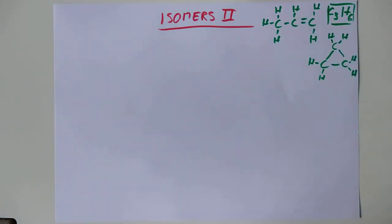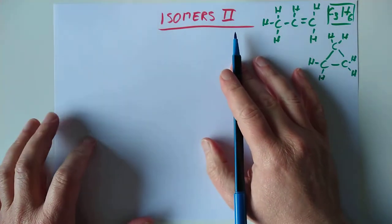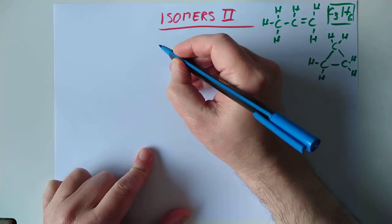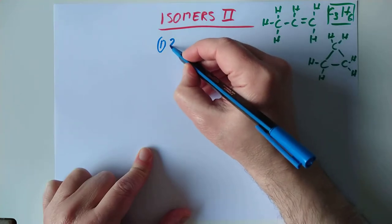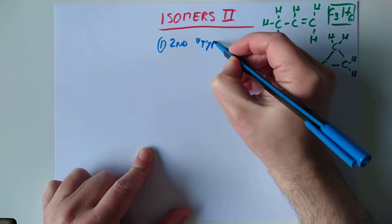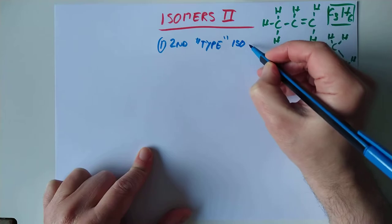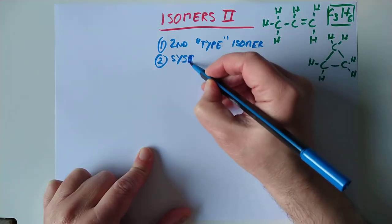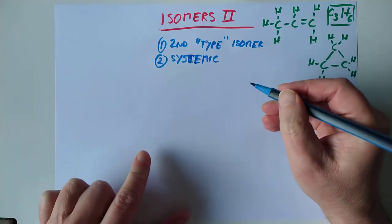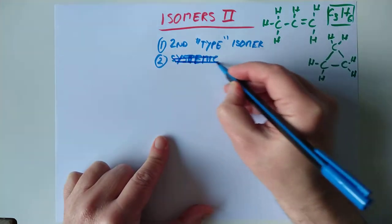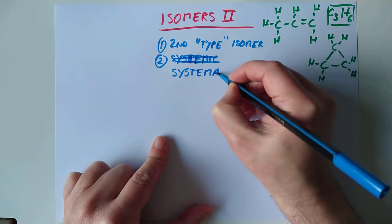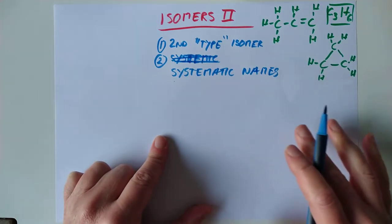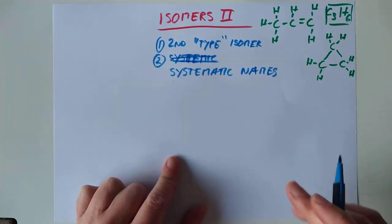In today's lesson, I would like to come back to isomers. This is isomers 2, the molecule strikes back. I would like to cover a second type of isomers and also systematic naming. I'll show you why simply saying butene is no longer good enough.